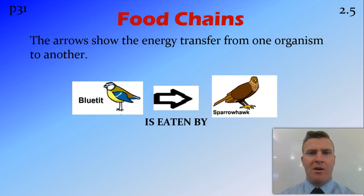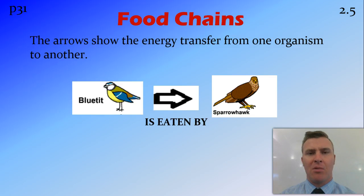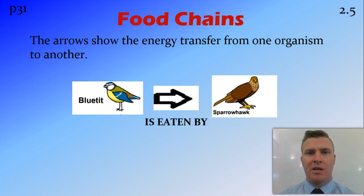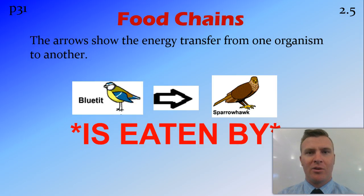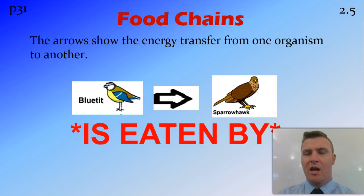You'll notice that the arrows go from the blue tit to the sparrowhawk, or 'is eaten by.' This is because it shows the flow of energy — the blue tit's energy becomes absorbed into the sparrowhawk. It's very important that the arrows go in this direction; it's something a lot of people confuse. Remember: 'is eaten by' or 'goes into.'